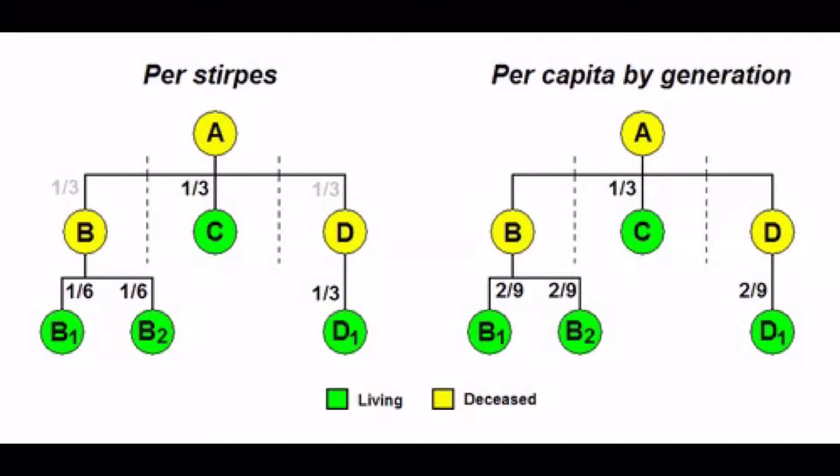This is also known as in-bootstrap because the intended beneficiaries, B and D, who are deceased in this example, their one-third share is then distributed in-bootstrap, or in a linear line downward.